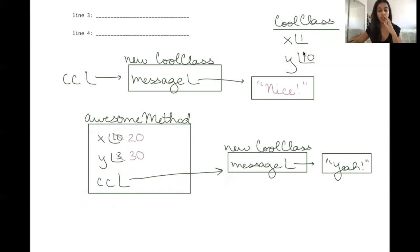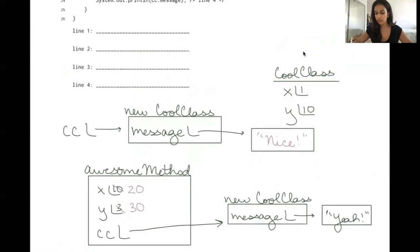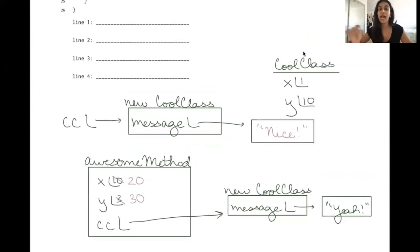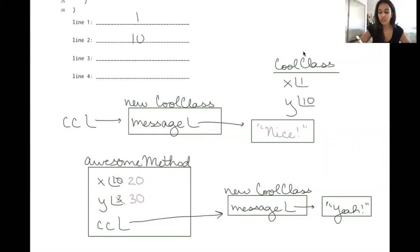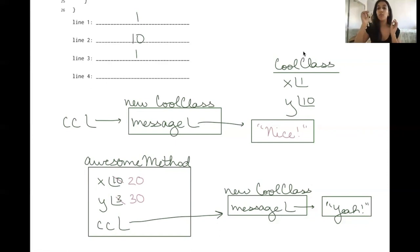Now that awesomeMethod is done, we move to the four print statements in main. The first prints x — referring to the static variable x — which is 1. The second prints y — referring to the static variable y — which is still 10. The third prints cc.x — x is a static variable, so any CoolClass object has the same value for x, which is 1. Even if we had another object like cc1, cc1.x would also be 1, regardless of how many objects are created.